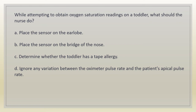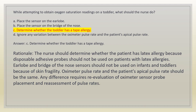While attempting to obtain oxygen saturation readings on a toddler, what should the nurse do? A. Place the sensor on the earlobe. B. Place the sensor on the bridge of the nose. C. Determine whether the toddler has a tape allergy. D. Ignore any variation between the oximeter pulse rate and the patient's apical pulse rate. Answer: C. Determine whether the toddler has a tape allergy. Rationale: the nurse should determine whether the patient has a latex allergy because disposable adhesive probes should not be used on patients with latex allergies. Earlobe and bridge of nose sensors should not be used on infants and toddlers because of skin fragility.